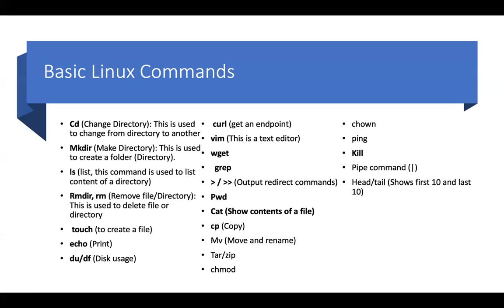GREP allows you to extract certain content from a file. For example, if your downloads folder has 100 different things and you're looking for files starting with 'Kenneth', you use GREP with that word. Instead of LS listing everything, GREP gives you exactly what you want. It's a very powerful and useful tool in Linux.